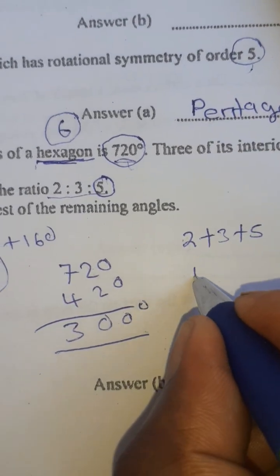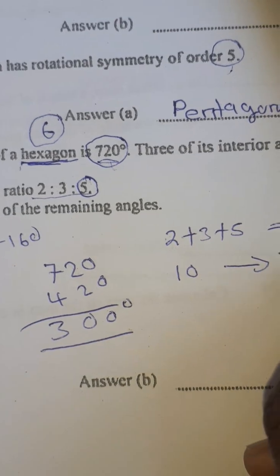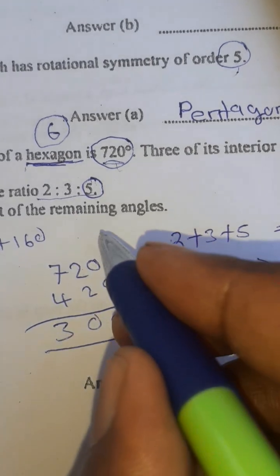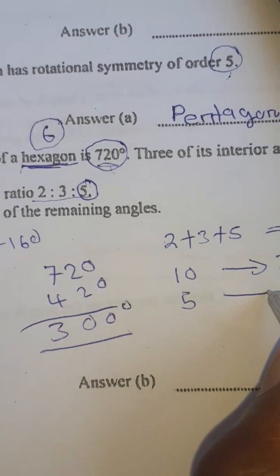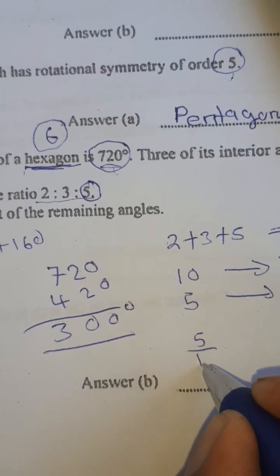10 is representing 300 degrees. What about 5 which is the largest angle? Are we getting more or less? We are getting less. So I'm going to say 5 over 10 multiply by 300.